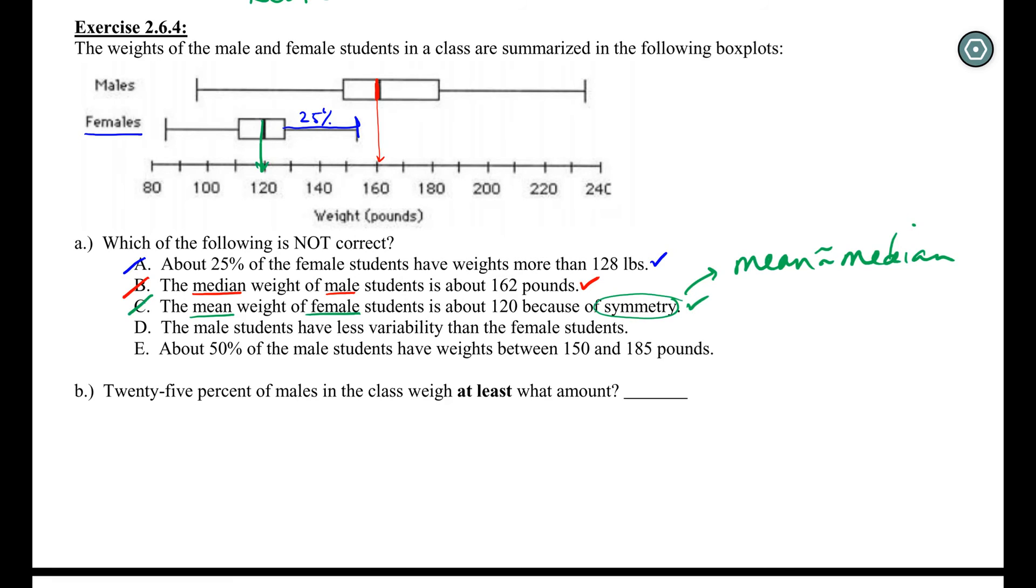D says the male students have less variability than the female students. And this is where we're getting in trouble. This is our wrong answer. Less variability. Look at the male students. If we're using the range, they are so much more spread out than the female students. If we're using the IQR, they are so much more spread out than the female students. So this is our correct answer choice, D.